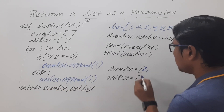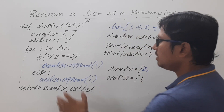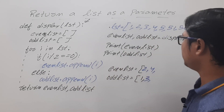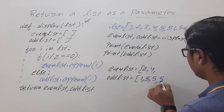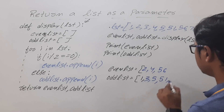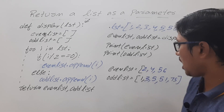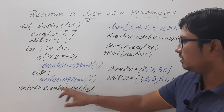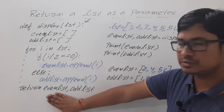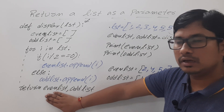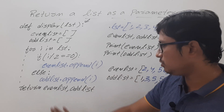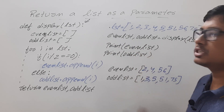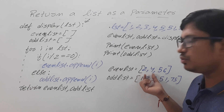Then 2: two modulus 2 equals 0, so the condition is true and 2 is appended to the even list. Then 3 is appended to the odd list because 3 is an odd number. Then 4 is an even number so it is appended to the even list. Then 5 is appended to the odd list, 51 is appended to the odd list, 56 is appended to the even list, and 75 is also an odd number. So you will have a list of even elements in the even list and odd elements in the odd list. In Python everything is an object, so a list is also an object. The control returns here, and you will get output: even list 2, 4, 56 - odd list 1, 3, 5, 51, 75.